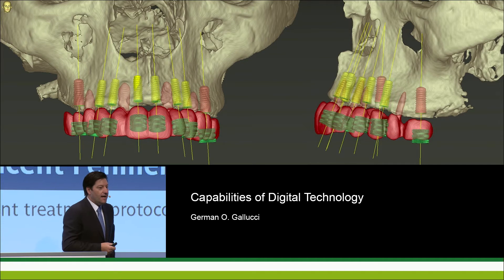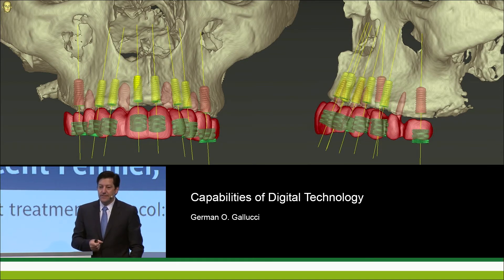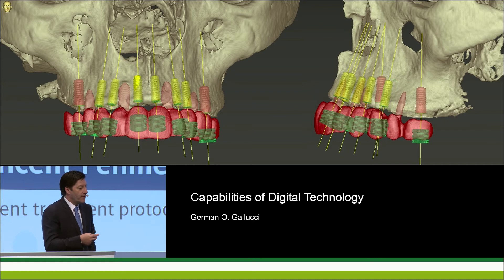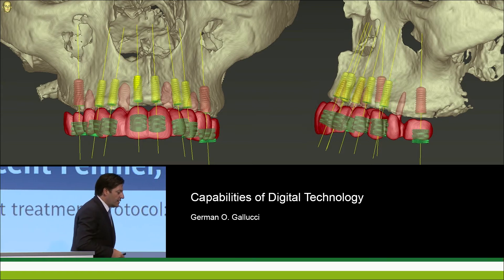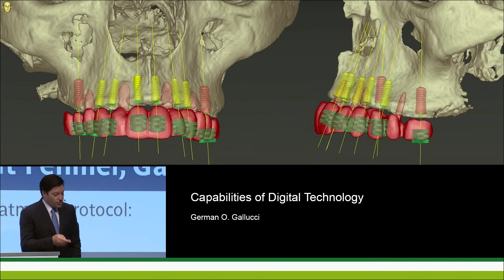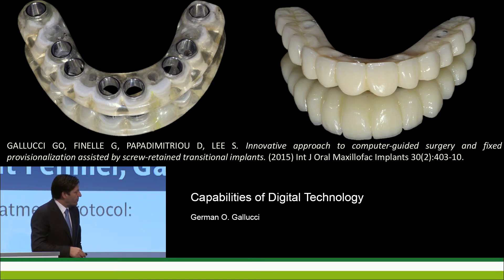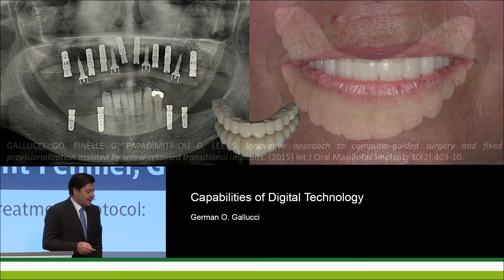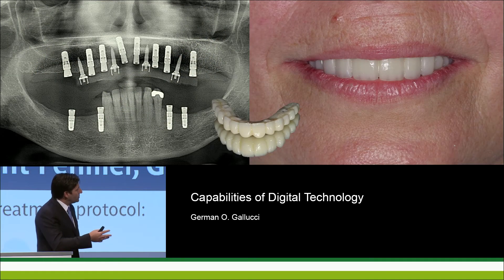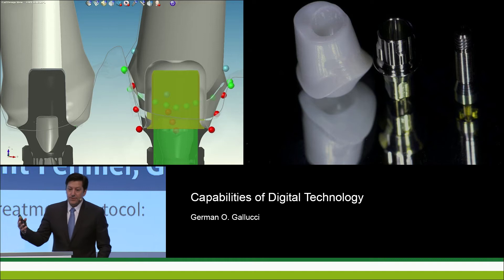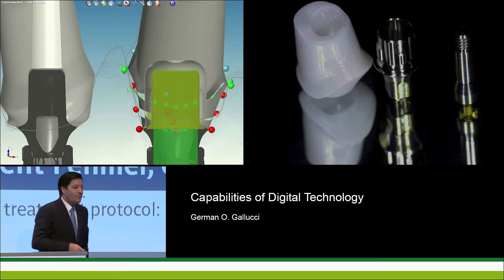I want to move to the next case. This is a case we treated some time ago with a resident in Boston. As you can see, we fully planned this full-arch case — we planned for eight implants using a mini implant technique to support the guide. This is the result of the fabrication of the screw-retained guide and also the screw-retained provisional described in the paper we wrote with Gary on this technique. The patient received the implants and healed while wearing these temporary prostheses sitting on the mini implants.